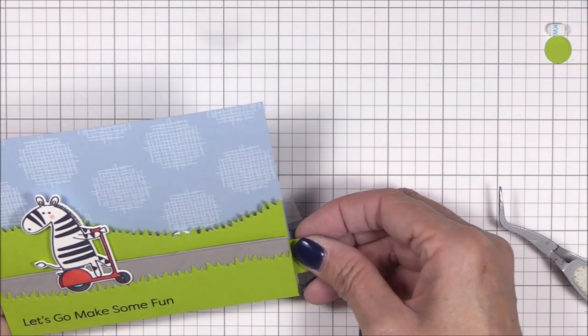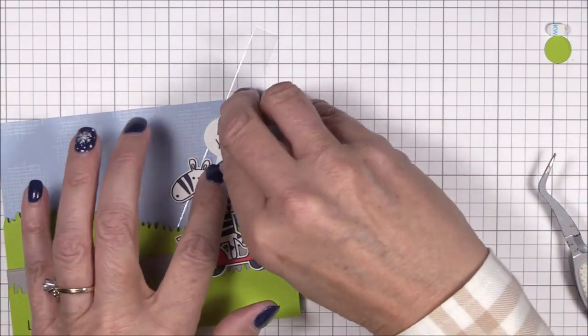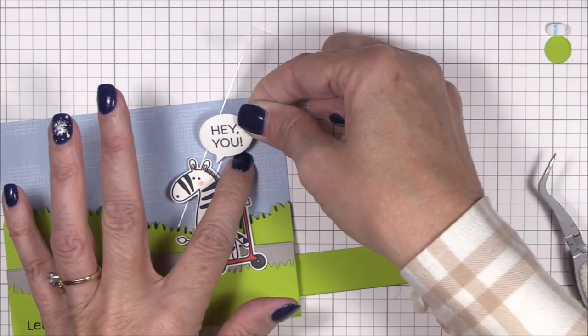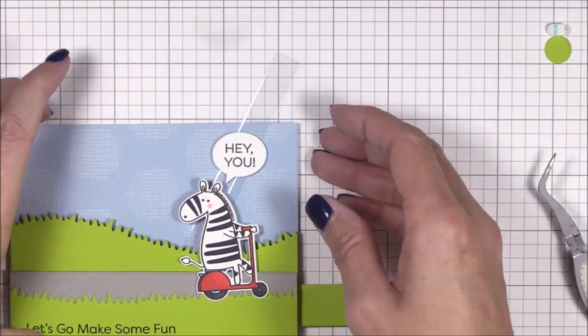It takes a little bit of trial and error to get the perfect fit, but once I do, I'm ready to lock it in place. By the way, the speech bubble was created using the peek-a-boo wheel dynamics and a sentiment from the More Essential Sentiments stamp set.